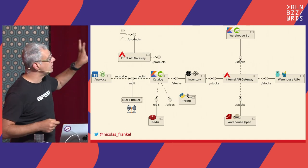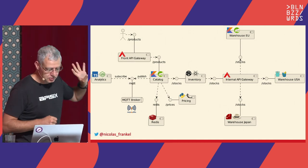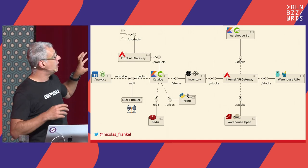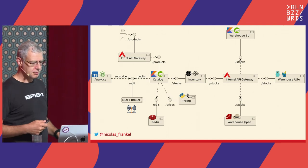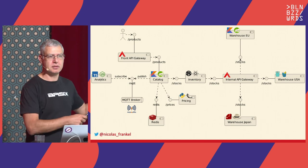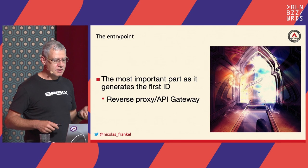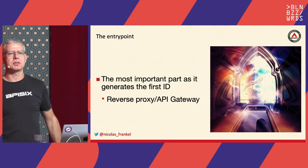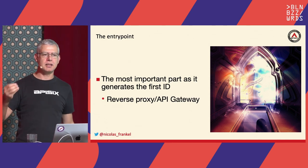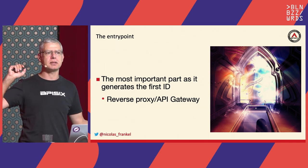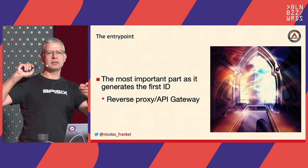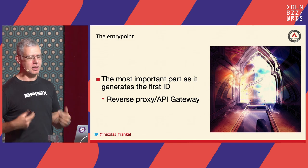The good thing is, depending on who is interested in what, I can do a drill-down into some components. Please don't ask me too much about things I don't know about — for example, this is my first Node.js application in my life, so it's probably very bad. The most important component is the entry point, because it's the one that generates the trace ID and the first span ID. In that case, I'm using Apache APISIX. Who knows about Apache APISIX?